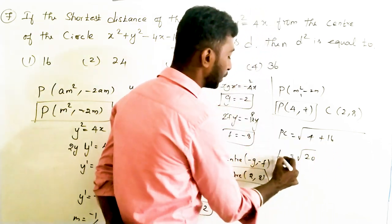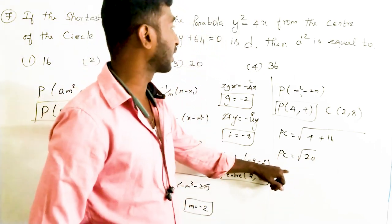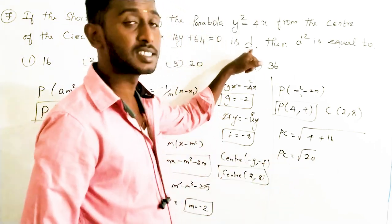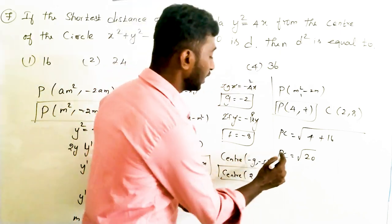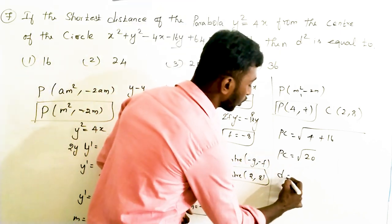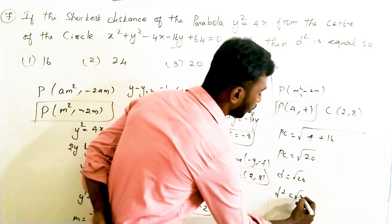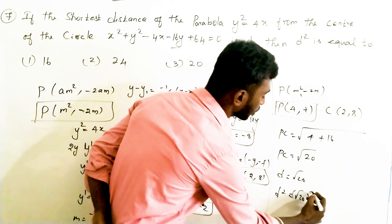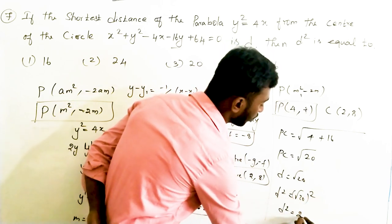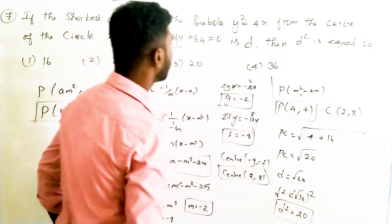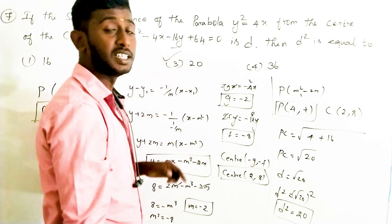So the value of d² is 20. The answer corresponds to option C. Thank you.